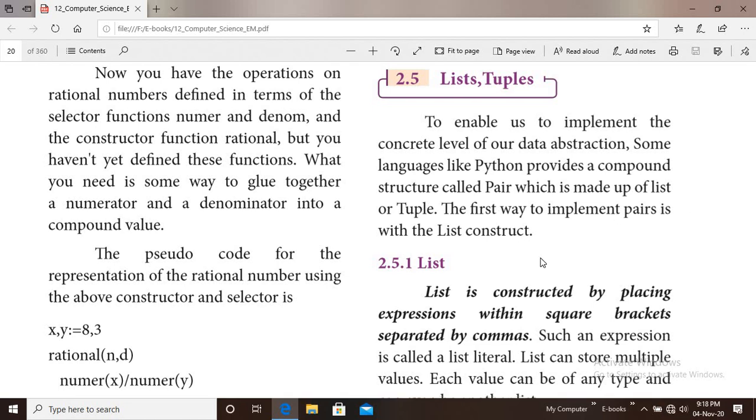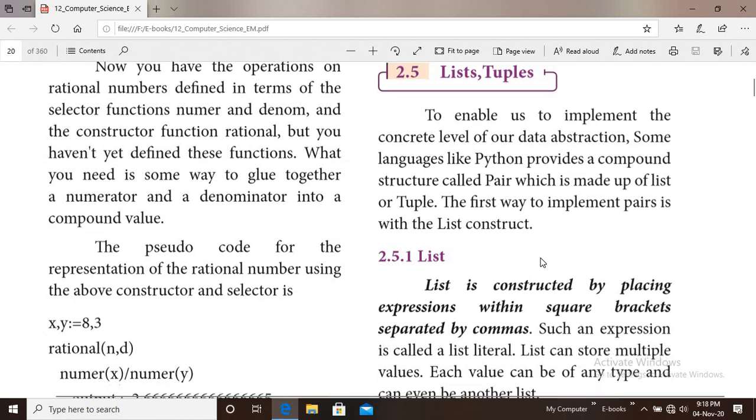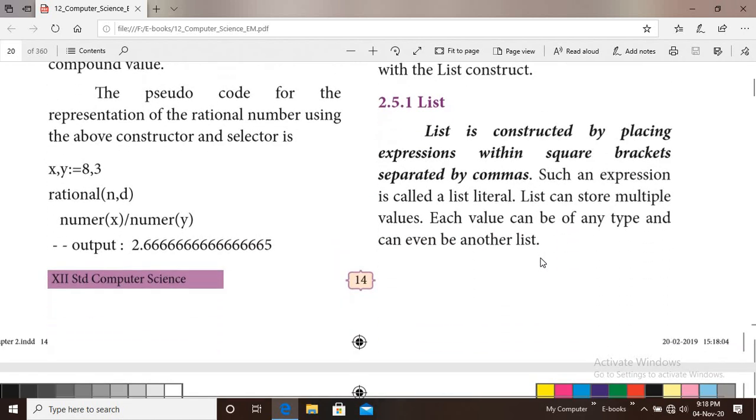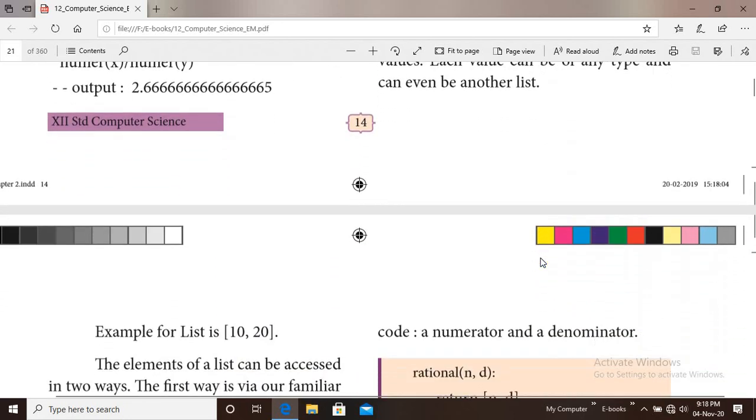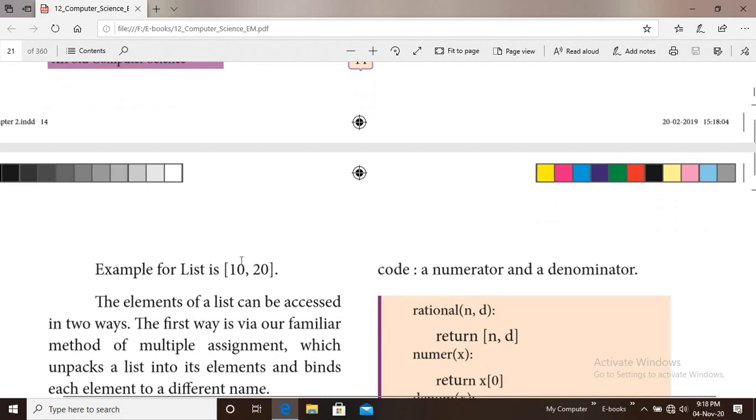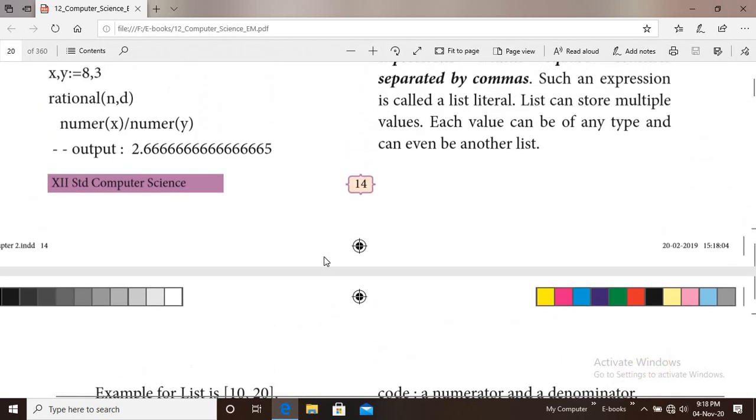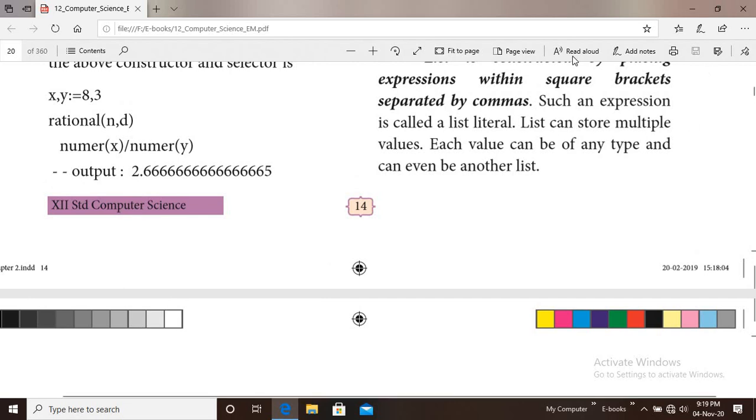We have pair with list and pair with tuple. First is list. List is constructed by placing expressions within square brackets separated by commas. List is a collection of data that are separated by commas. Such an expression is called a list literal.